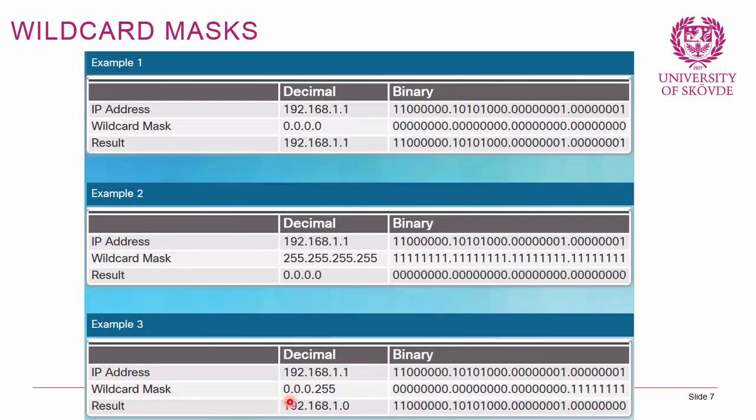There is a special case: the all-zeros wildcard mask, known as the host wildcard mask. When combined with an IP address, a match only occurs on an exact match. So if you have IP 192.168.1.1 with an all-zeros wildcard mask, only exactly 192.168.1.1 matches. Conversely, an all-ones wildcard mask means 'any' — any IP address will match regardless of the address specified.